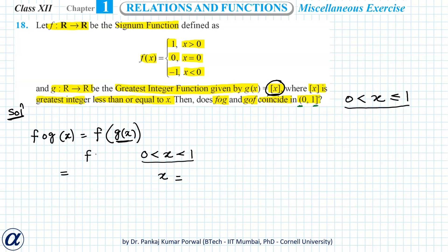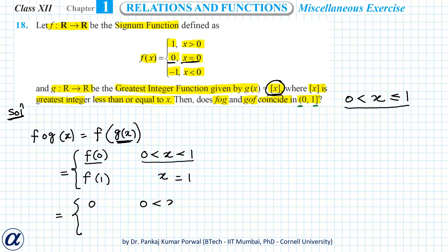So fog(x) becomes f(0) when 0 < x < 1, and when x equals 1, g(x) equals the greatest integer of 1, which is 1, so fog(x) becomes f(1). Now f(0) equals 0, so fog(x) equals 0 for 0 < x < 1. And f(1) equals 1 using the signum definition, so fog(x) equals 1 for x equals 1.